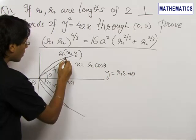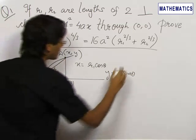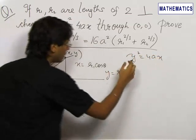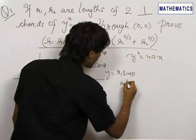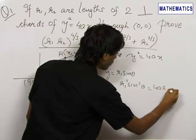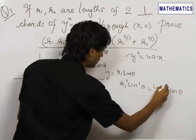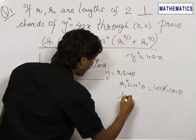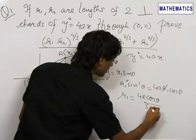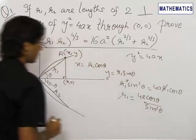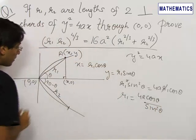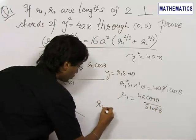Now since the point (x, y), that is point A, satisfies the parabola y² = 4ax, putting the coordinates of x and y into this equation we get R1²·sin²θ = 4a·R1·cos θ, giving us R1 = 4a·cos θ / sin²θ. For R2, we replace θ by 90° − θ to get R2 = 4a·sin θ / cos²θ.